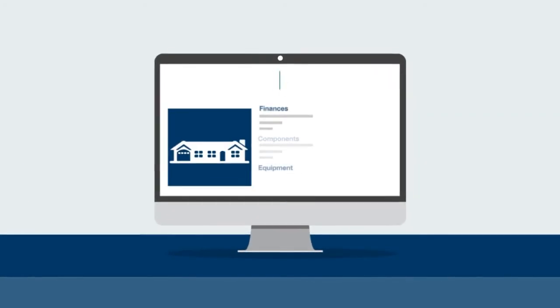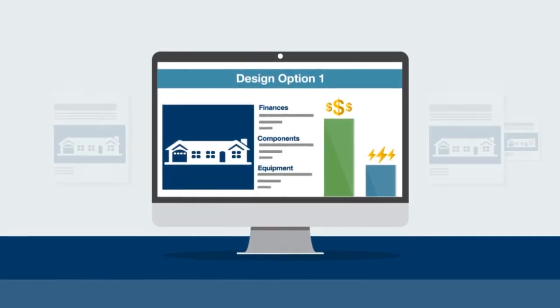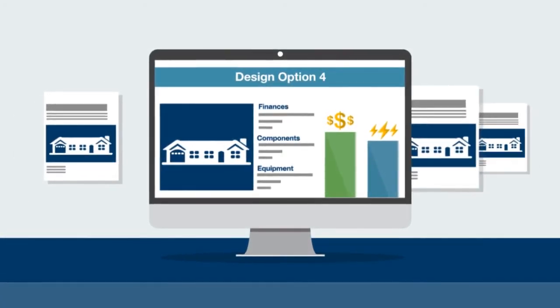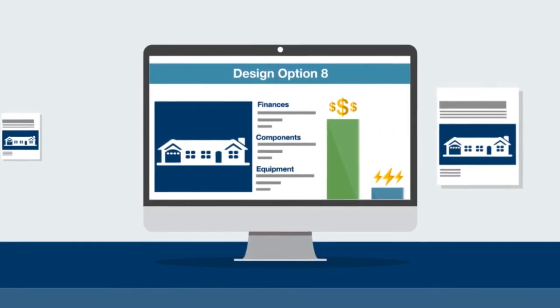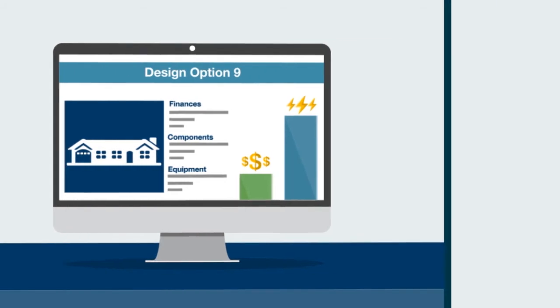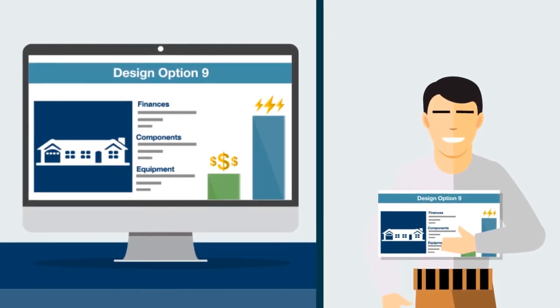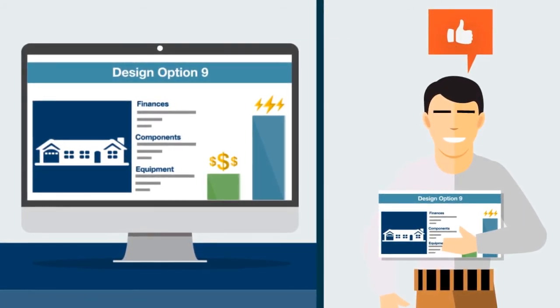Instead of looking at a handful of design options one at a time, Ecotrope considers all your options simultaneously, analyzing both cost and energy performance. So in just a matter of minutes, you can find the most cost-effective and energy efficient combination possible.